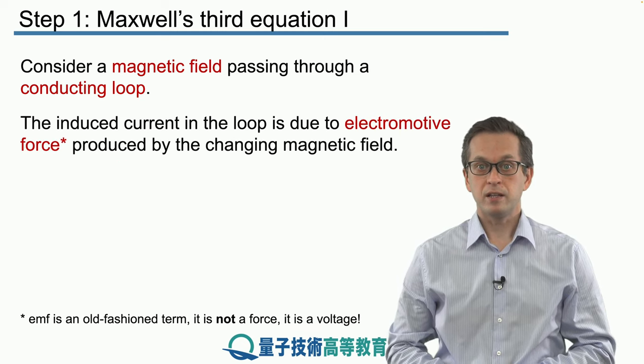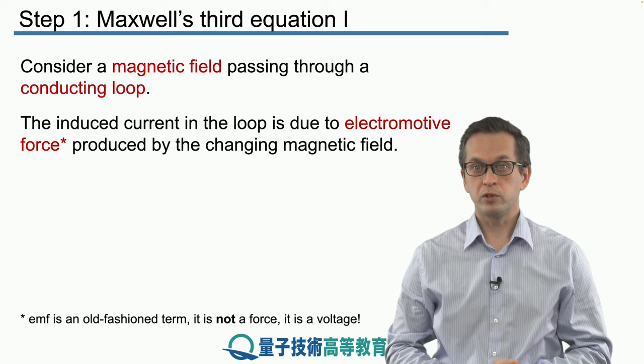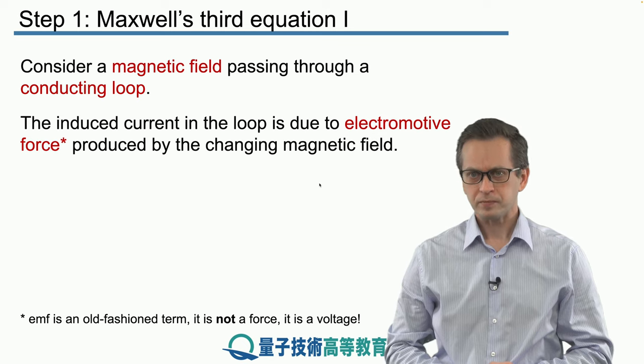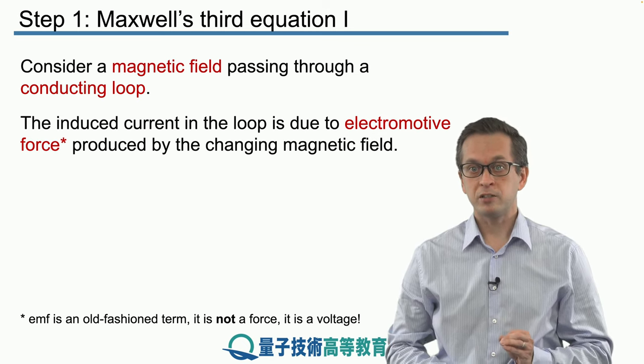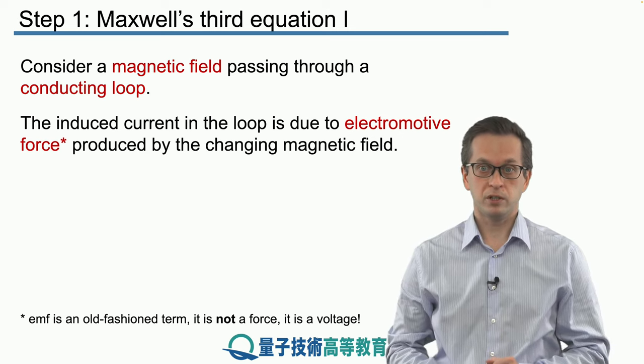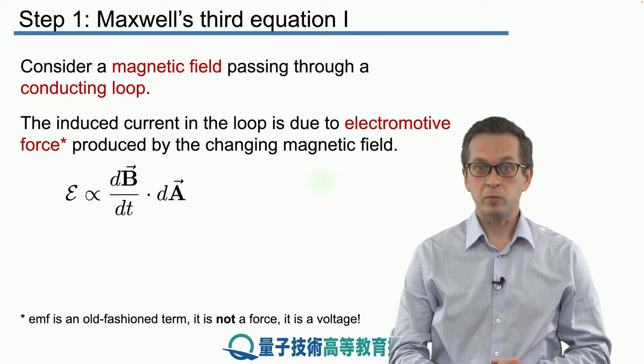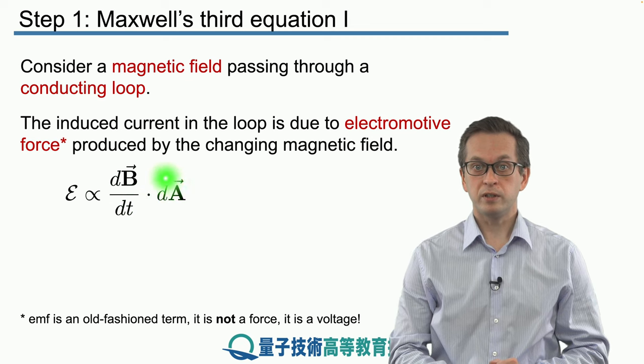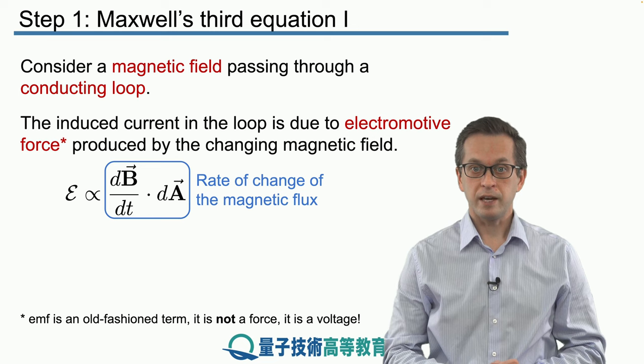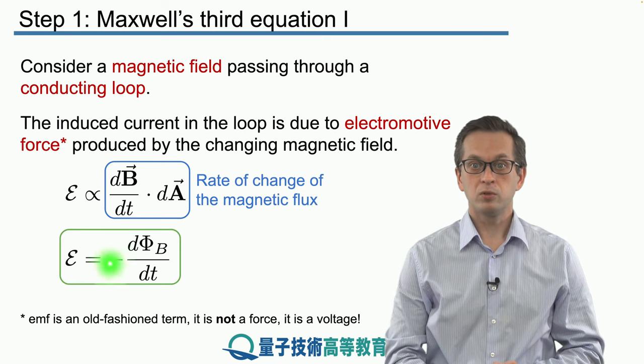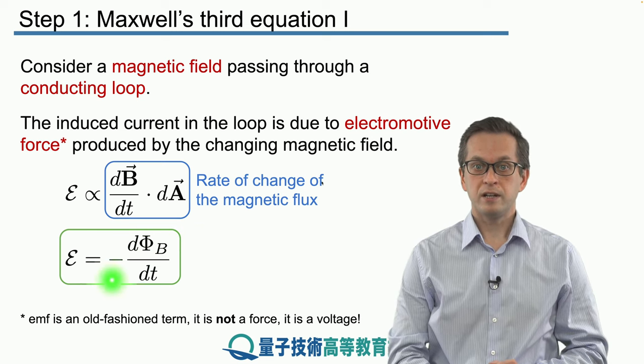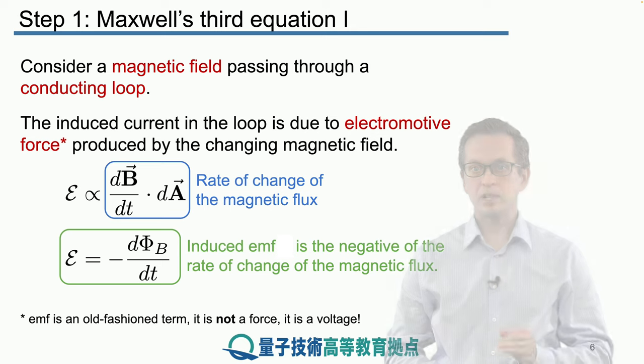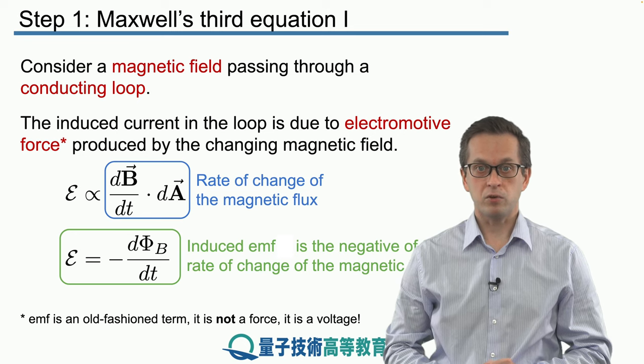The induced current in the loop is due to an electromotive force produced by the changing magnetic field. This word electromotive force is rather archaic - it's not really a force, but means the changing magnetic field produces a potential difference or voltage in the loop. The EMF is proportional to the change of the magnetic field dot product with the area, equal to the rate of change of the magnetic flux. Now there's a minus sign, which is because the induced EMF is negative in order to oppose the change that the magnetic field is causing.